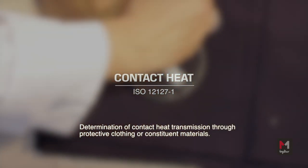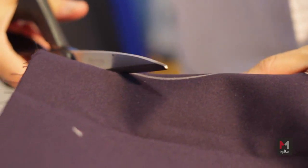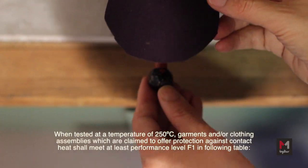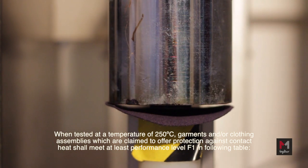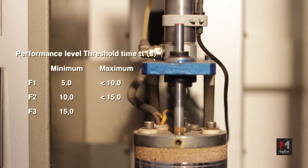Contact Heat: The fabric specimen is placed over a heated metal cylinder at 250 degrees Celsius. On the other side of the fabric there is a calorimeter that measures the temperature rise. The time of the calorimeter to increase 10 degrees Celsius is calculated.